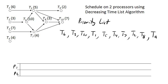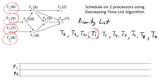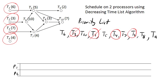Now that we have our priority list, let's go ahead and schedule this on two processors. We start by identifying the ready tasks, which are task one, task two, task three, and task four. We assign the first two ready tasks on the priority list, so we assign T3 and T1 to processor one and processor two.